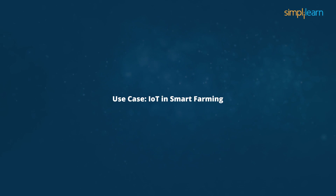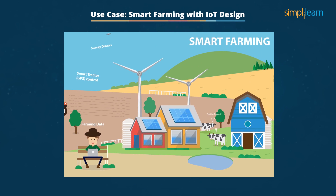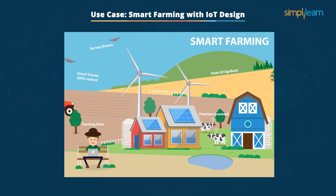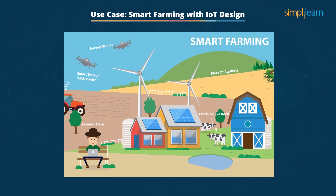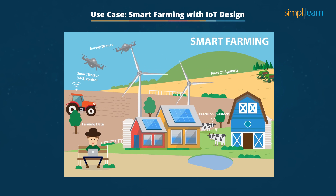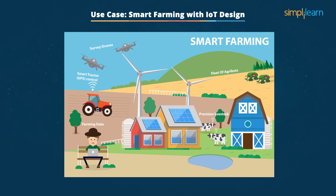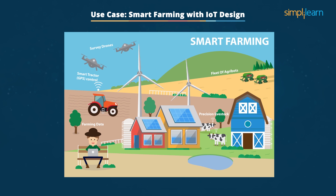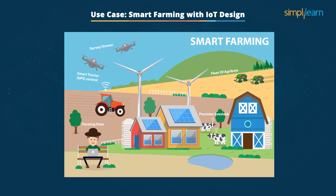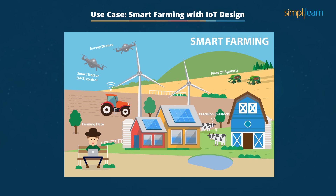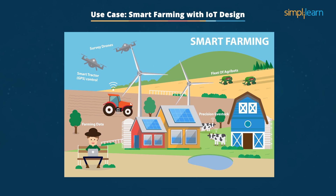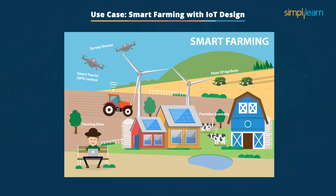Use Case: IoT Smart Farming. This use case addresses the design formalities using IoT. Smart farming requires precise architecture and components that help bring benefits to farmers. The various factors that determine the IoT design are data, cost efficiency, and product quality. The efficiency and durability of the ecosystem help farmers plan their harvest based on climatic conditions using sensors and geospatial location data.